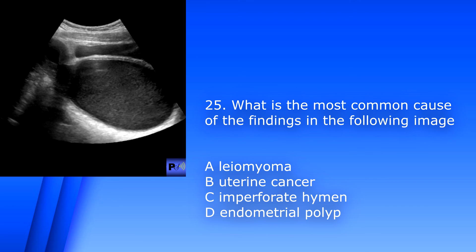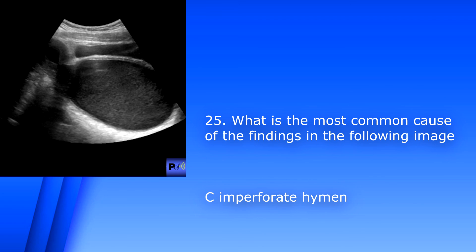Number 25. What is the most common cause of the findings in the following image? A. Leiomyoma. B. Uterine cancer. C. Imperforate hymen. Or D. Endometrial polyp. So this is a young adolescent girl; she has hematometriacolpus, or blood in the vaginal canal and endometrium, and it is most commonly caused by imperforate hymen. Leiomyoma is a fibroid, usually seen in older women, and there's no reason to suggest endometrial polyp or cancer. This ends the first 25 questions.